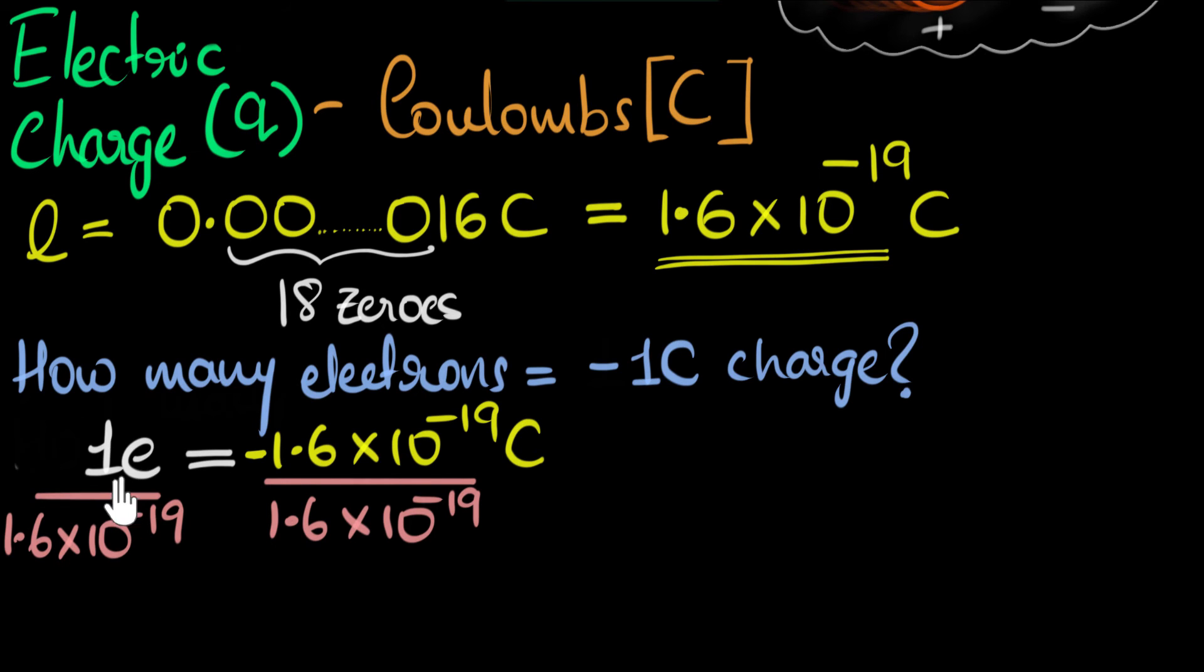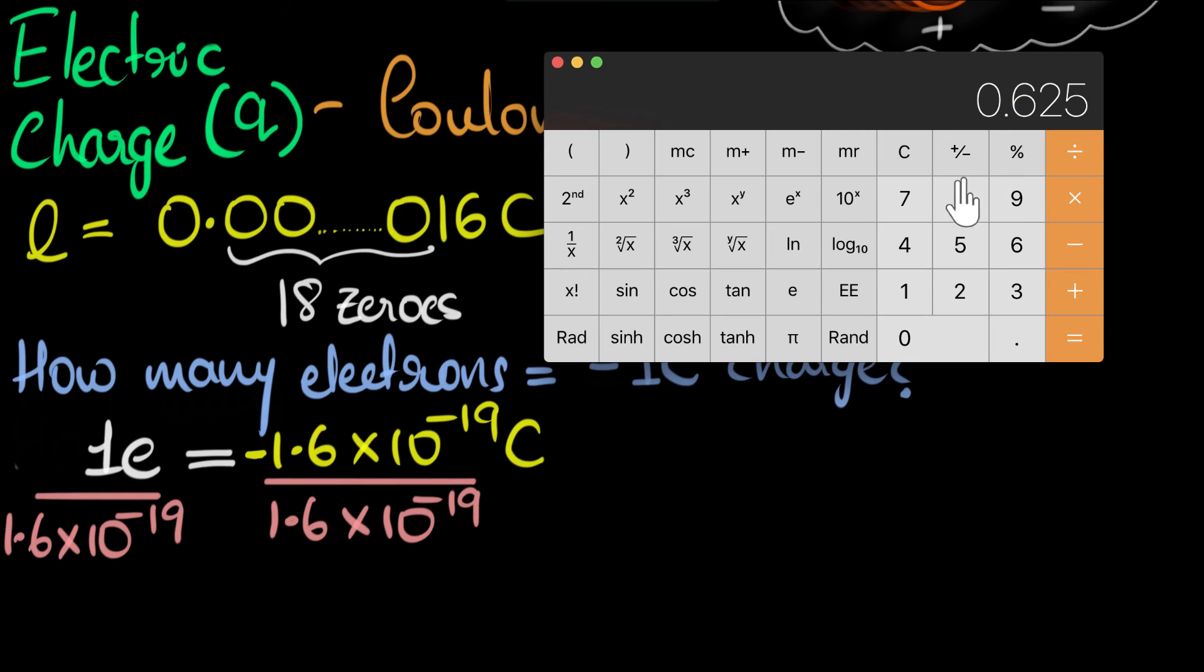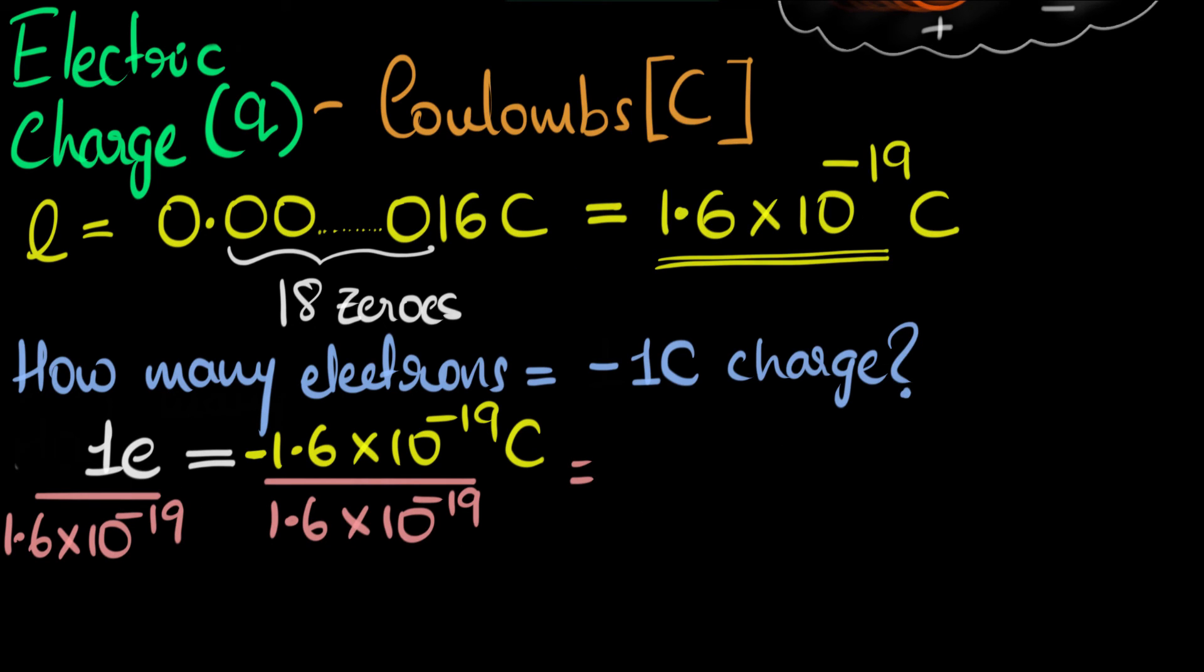So on the left-hand side we have 1 divided by 1.6. Let's bring in my calculator and see what that gives me. So it'll be 1 divided by 1.6. That will be 0.625. So that will be, on the left-hand side, 0.625. That's 1 divided by 1.6. And this will become 10 to the power plus 19.